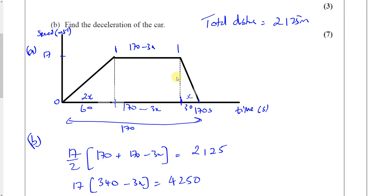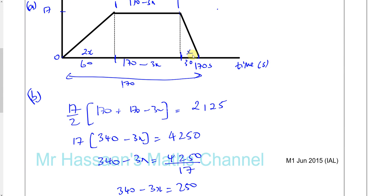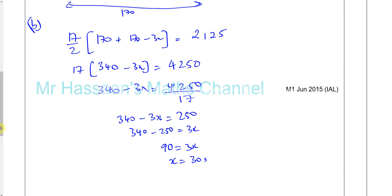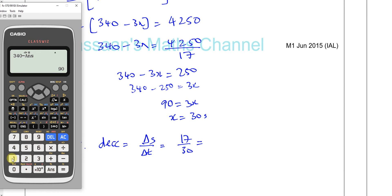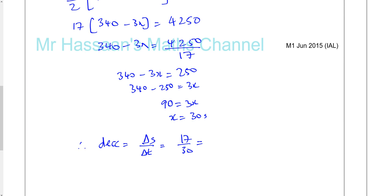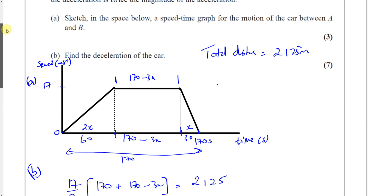All we need is the deceleration of the car. We know it took 30 seconds to go from 17 meters per second to 0. So the deceleration is the change in speed over the change in time, which is 17 over 30, giving 0.567 meters per second squared to 3 significant figures. We don't put a negative because it's already stated as a deceleration.